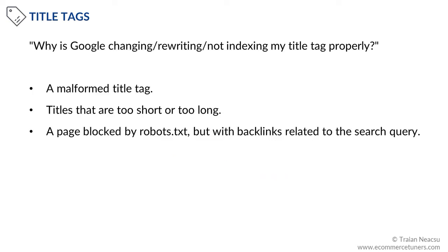A very common question is: why is Google changing, rewriting, or not indexing my title tag properly? Google's goal is to provide the most relevant titles for searchers, and they will use various data sources and signals to accomplish this. They will analyze the page content and look for external relevant signals to match a user query with relevant content extracted from a page. Here are a few scenarios that may trigger search engines to alter SERP titles: a malformed title tag; titles that are too short or too long; a page blocked by robots.txt but with many backlinks related to the search query. Getting a different title in the SERPs than the one in the HTML code does not mean that Google indexed your pages incorrectly — it just means that the search query determines whether your HTML title tag is displayed.